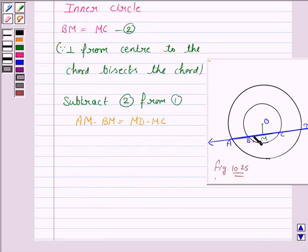Now, AM minus BM is AB, and MD minus MC is CD. So we have proved that AB is equal to CD.